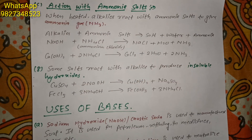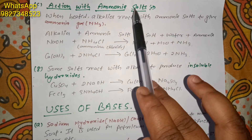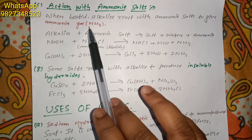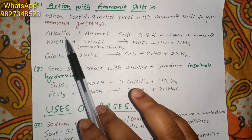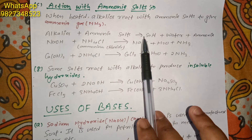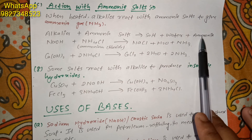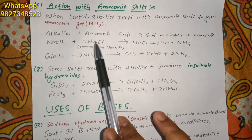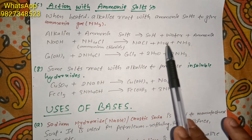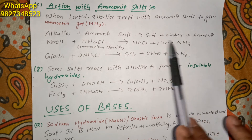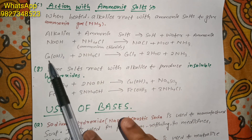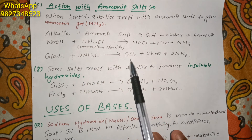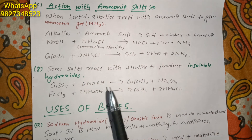The third type of reaction is action with ammonium salts. When heated, alkalis react with ammonium salts to give ammonia gas (NH3): alkali + ammonium salt → salt + water + ammonia. For example, sodium hydroxide reacting with ammonium chloride gives sodium chloride, water, and ammonia. Similarly, calcium hydroxide reacting with ammonium chloride gives calcium chloride, water, and ammonia.